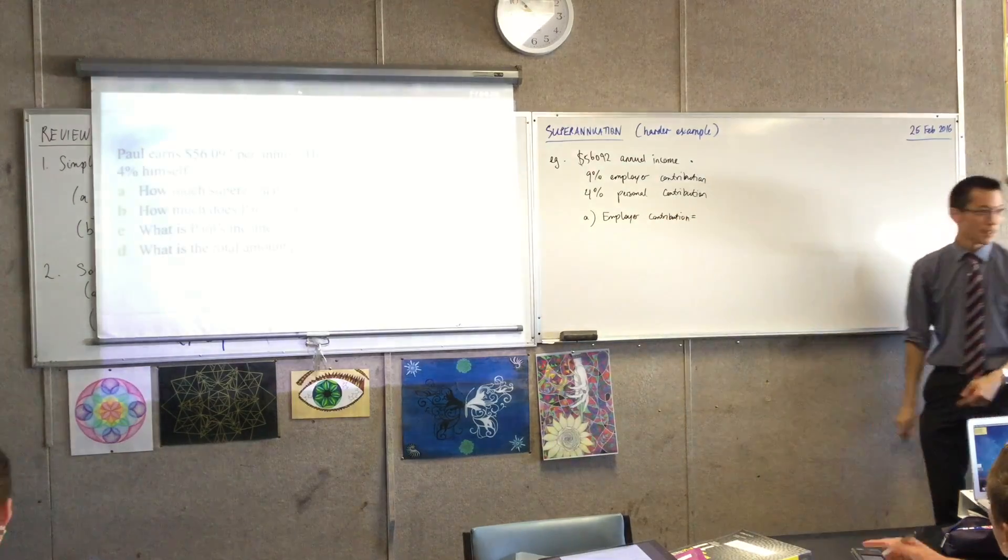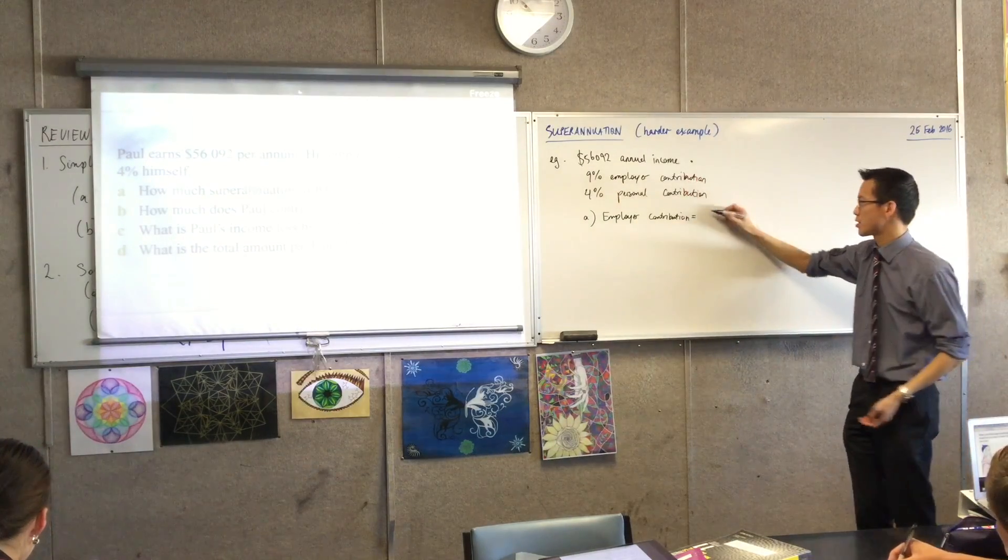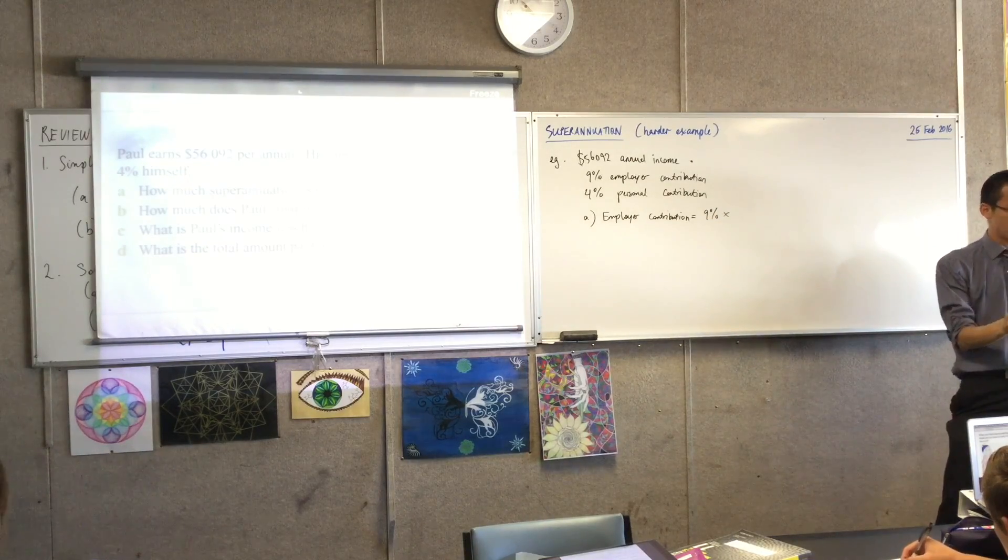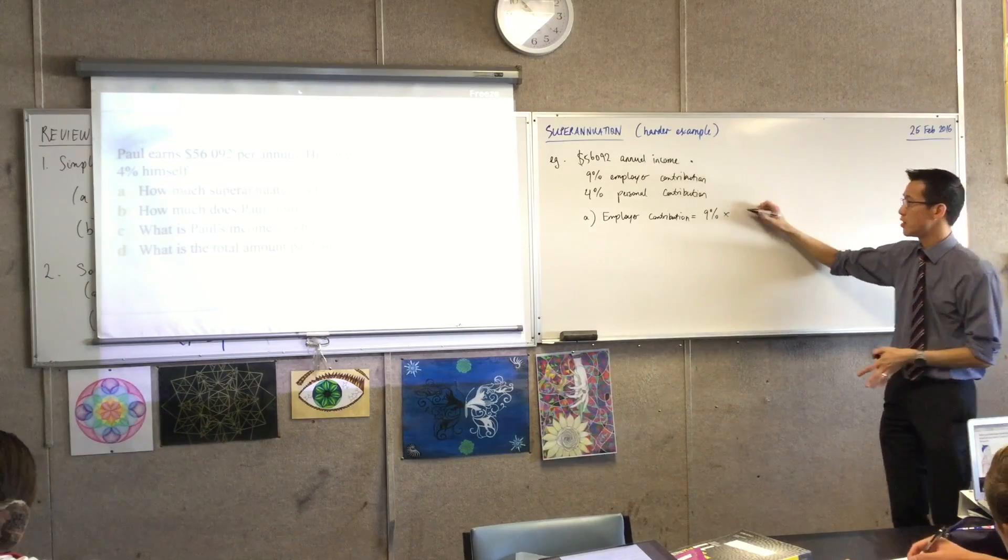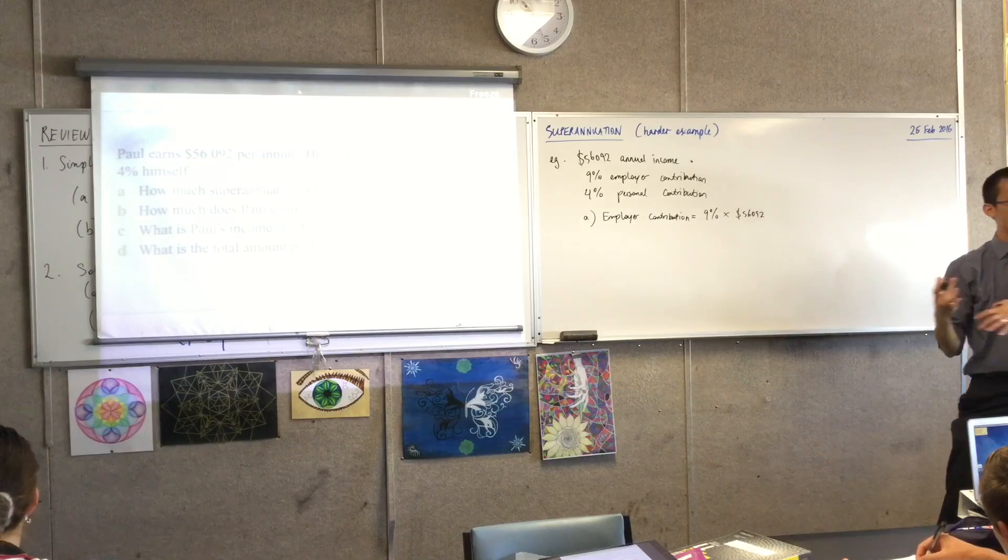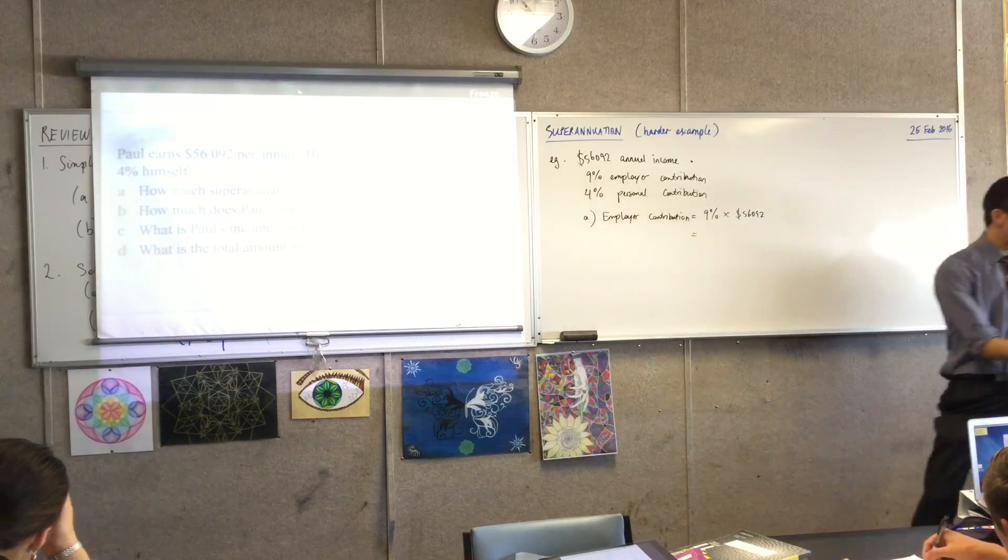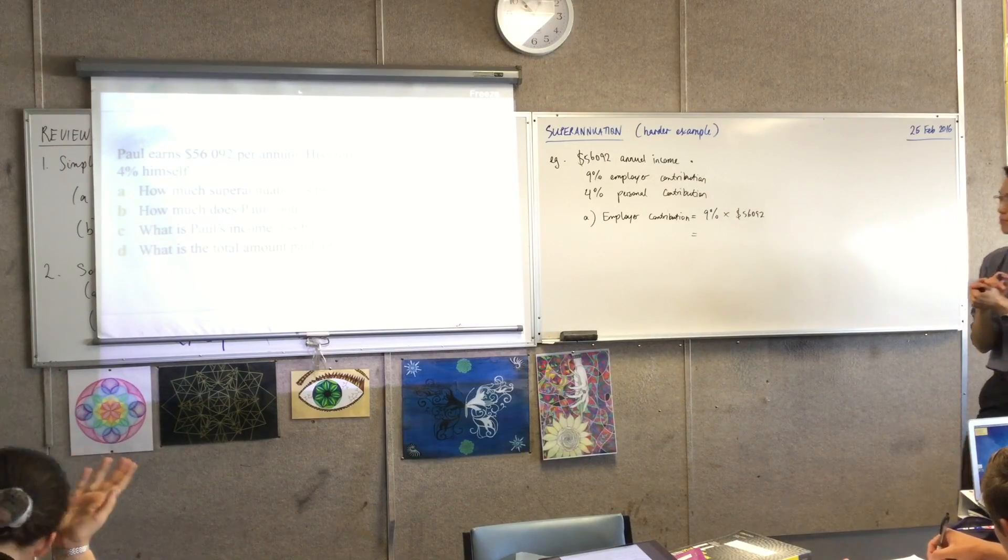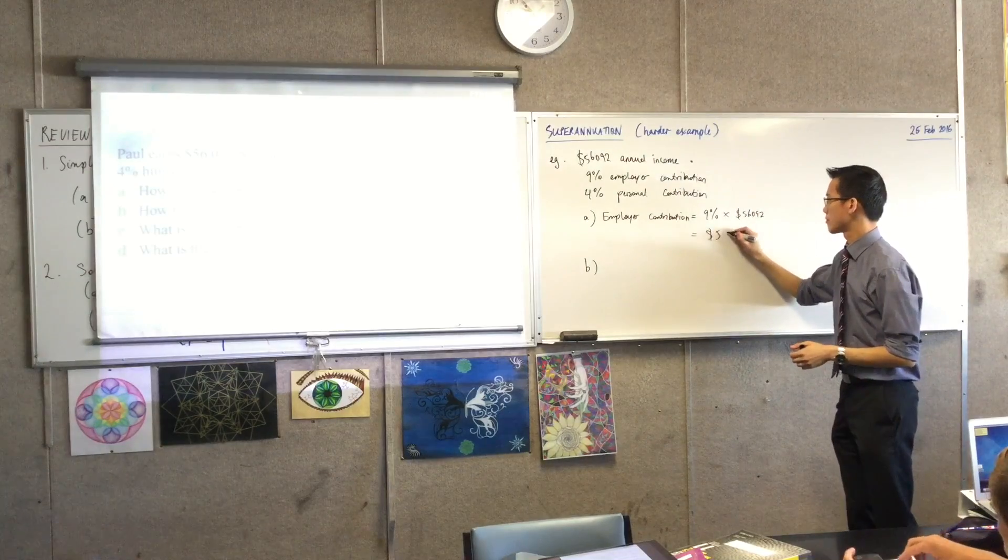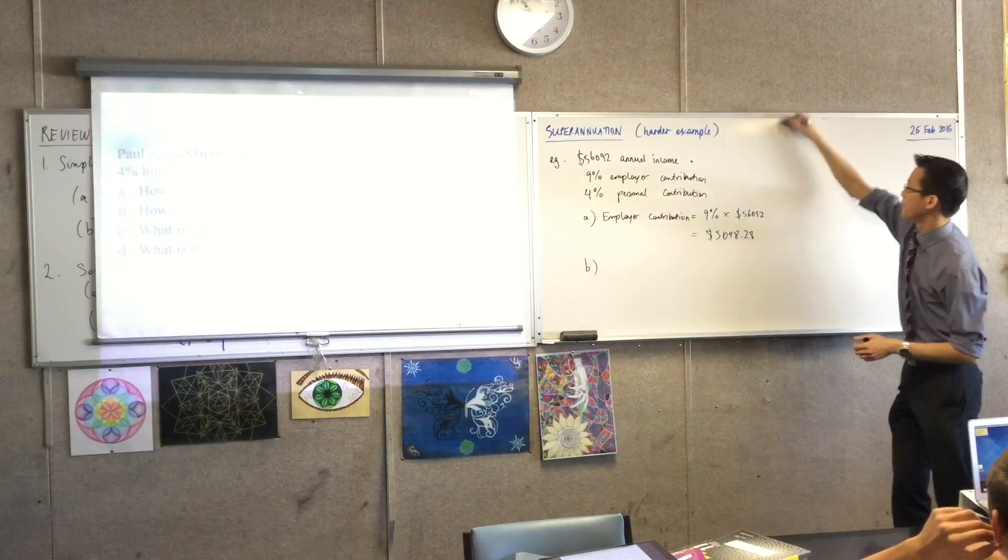So Part A, all I need to say is on Paul's behalf, the employer contribution, the actual dollar amount. All it is, is 9% of that annual income. That's all I need to calculate. As has been the theme of this whole topic, really, the maths of this, the operations are not hard. They're not complicated. What is tricky is the interpretation and knowing what to do with the right numbers.